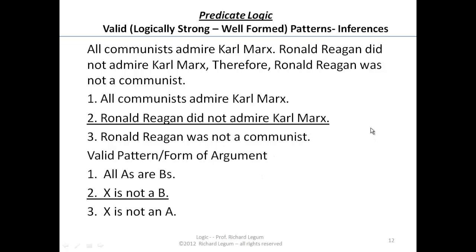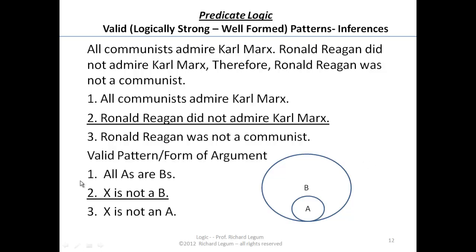If we're looking at the pattern of argument, let's take a look at the Venn diagram, because it will help us understand our picture of the inference — why this is a good pattern of argument. Let's look at the class of B's: everything that's a B is in that circle. And we see all A's are B's, so everything that's an A is within the circle of B's. The second premise tells us that X is not a B, so X has to be outside of that circle. From that, we can conclude that X is not an A, because there's no way that X can be in the A circle but not in the larger B circle.